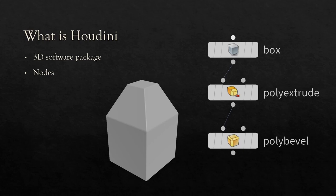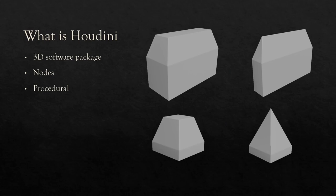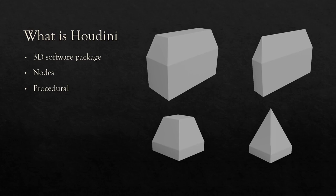When you build a node network — say you do a box, then an extrusion, then a bevel — you can have a basic shape. The reason we create these node-based structures is to work procedurally and non-destructively. From the same three nodes, I can almost instantly get variations: make the box larger, smaller, different shapes and sizes, and the network adapts. The extrusion stays on top, the bevel stays on the edges. This could be the start of a building tool. That's why Houdini is interesting — the procedural, non-destructive workflow.